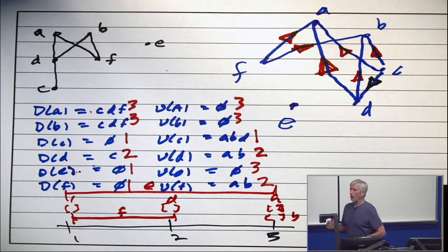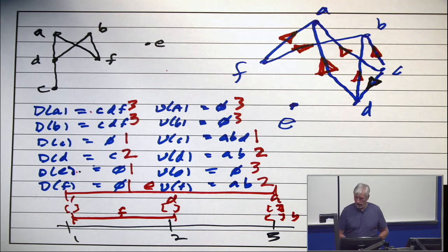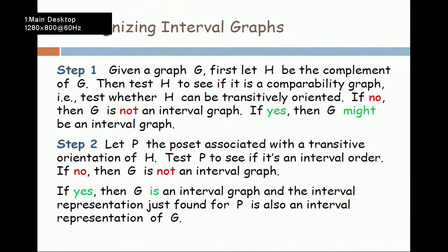So we know how to test whether or not a graph is an interval graph in polynomial time, putting those two things together. Now let's go back out and just wrap up things with a couple of observations.